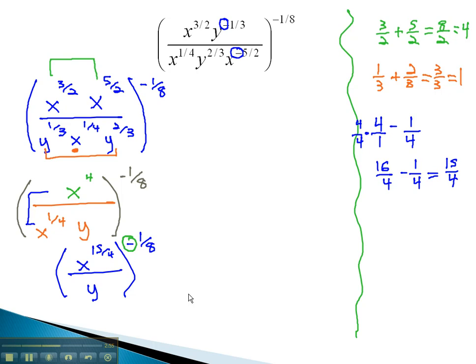When the exponent outside of parentheses is negative, it will simply take the reciprocal of that internal fraction. So now, we move the x to the 15-fourths down and the y up. Now, the exponent of 1-eighth is positive.